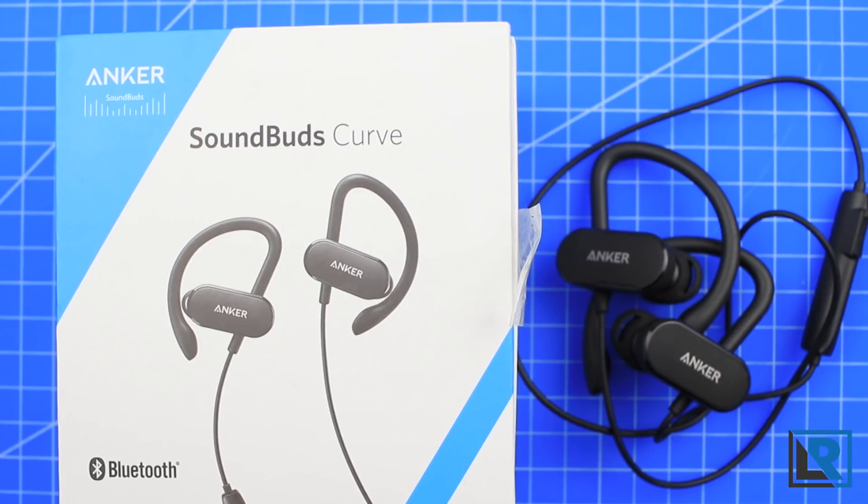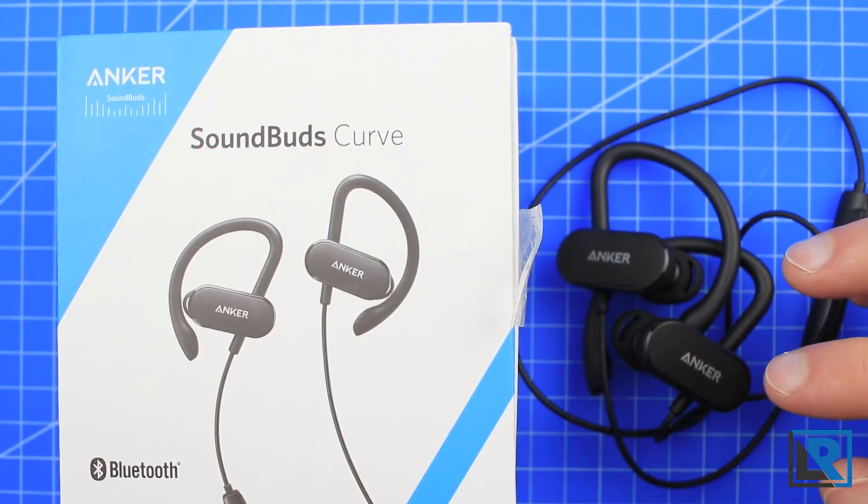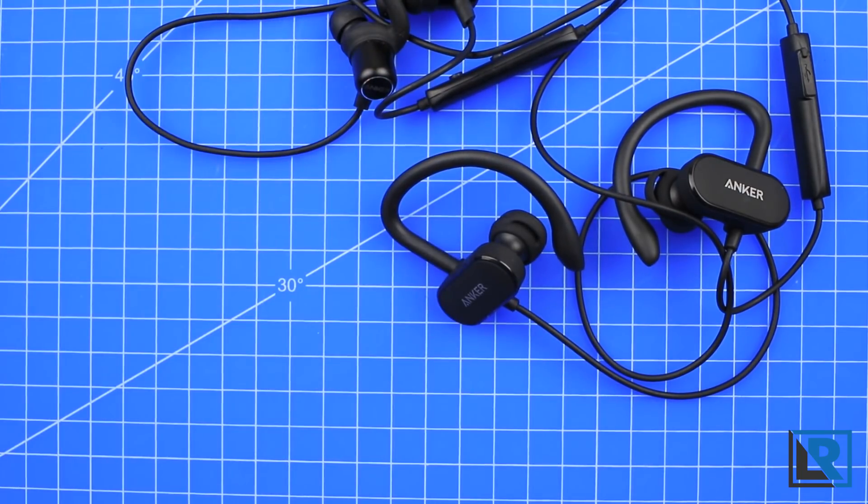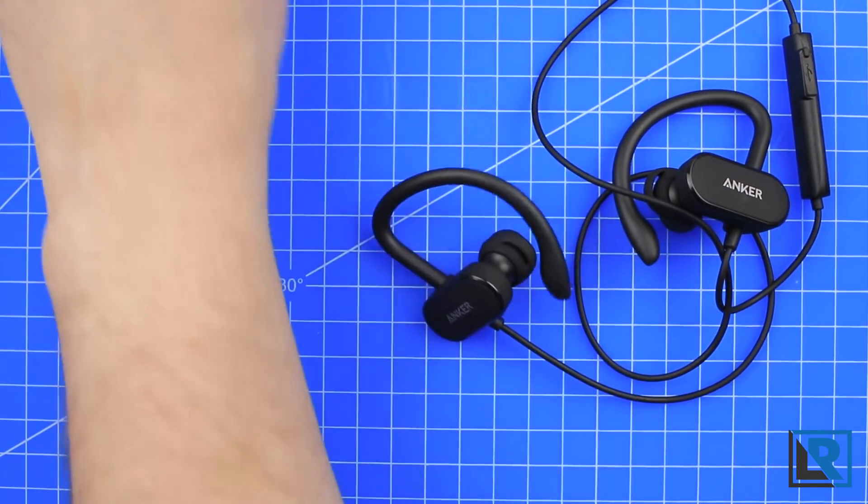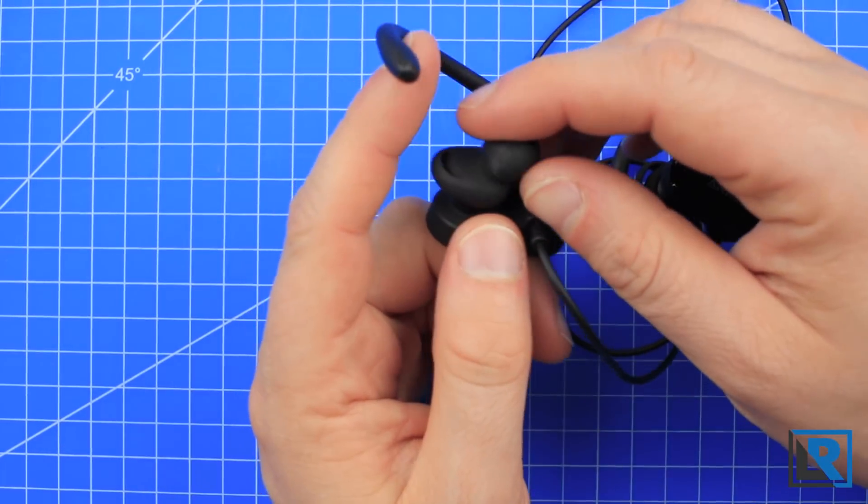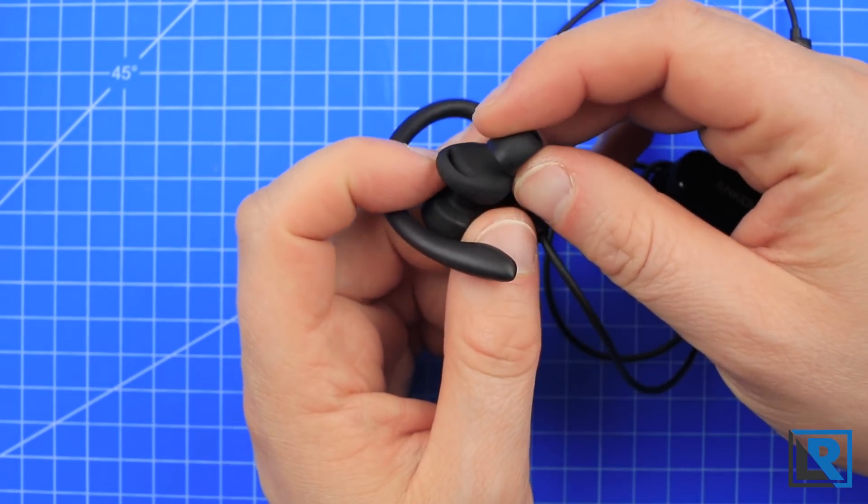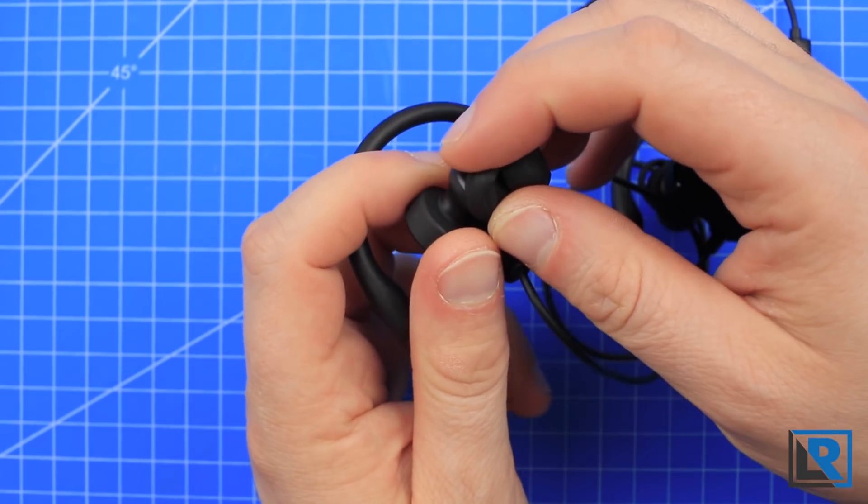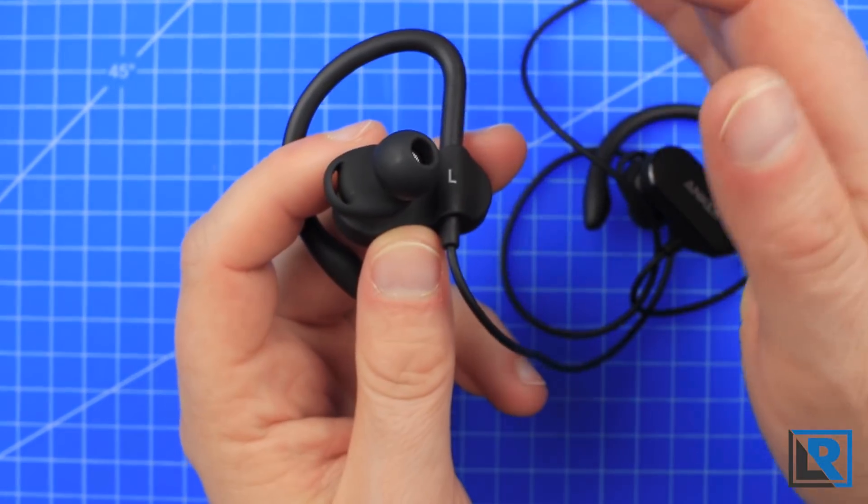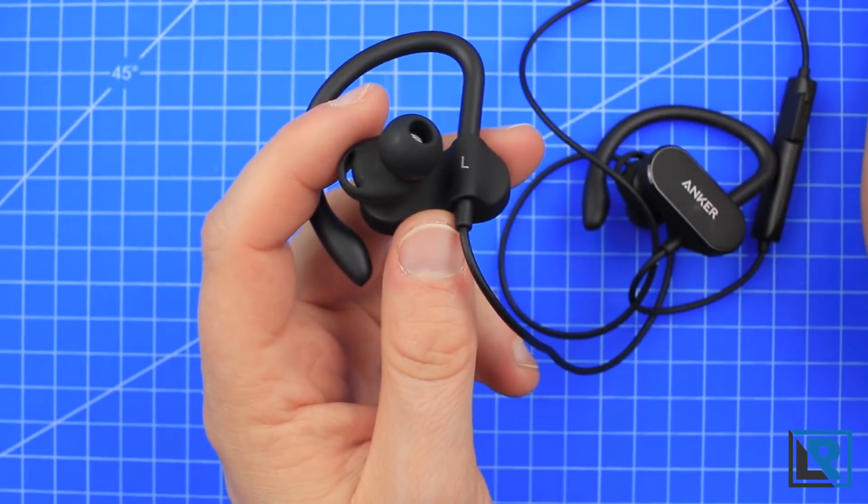Today's review is on the new SoundBud Curve. Thanks to Anker for sending these out for review. The SoundBud Curve takes what's great from the SoundBud Sports and changes how they stay in your ear by adding a hoop that goes behind your ear. They also change the tip size just a little bit. You get a new piece and a different ear tip. This helps them stay in place when being active like out running.